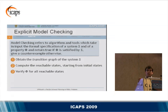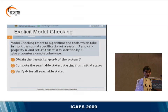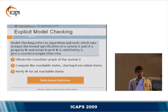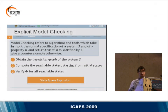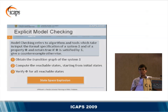Unlike symbolic model checking, in the explicit approach we explicitly enumerate all visited states. The main problem of such an approach is the so-called state explosion, since for complex systems the state space is huge. Nevertheless, the model checking community is trying to find techniques and methods to mitigate this problem.